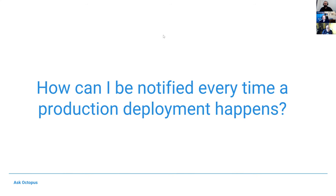The email step and the Slack step work out great and most people are using those, but it's not really a catch-all. That's the feedback I've been getting from customers. It doesn't catch everything — you have to set it up on every project. If someone adds a new project and doesn't add the step, or removes it, or you switch from Slack to Teams, you'd have to go update dozens of projects.